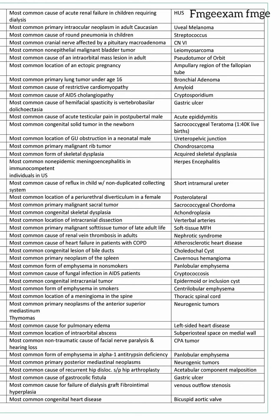Most common cause of acute renal failure in children requiring dialysis is HUS. Most common primary intraocular neoplasm in adults is uveal melanoma. Most common cause of round pneumonia in children is Streptococcus.